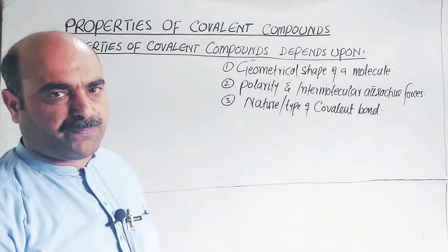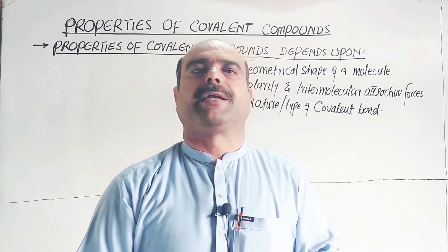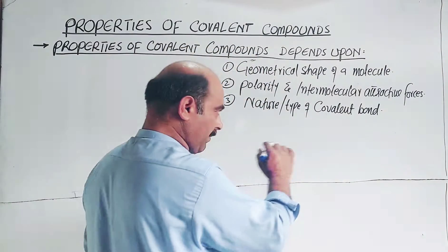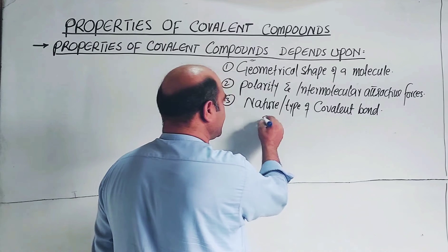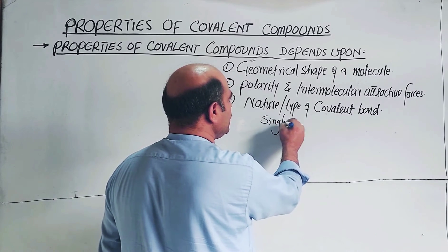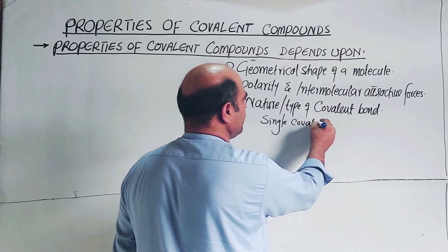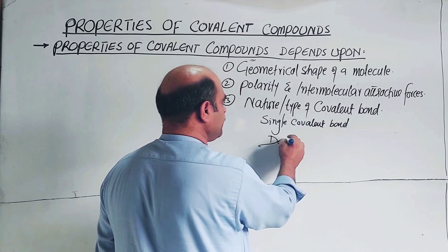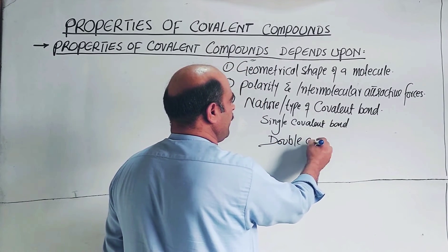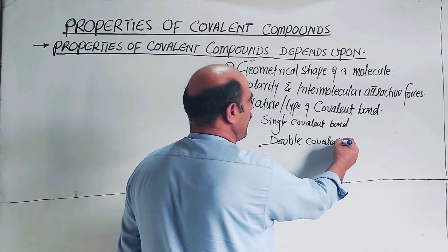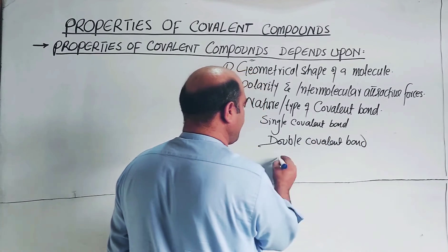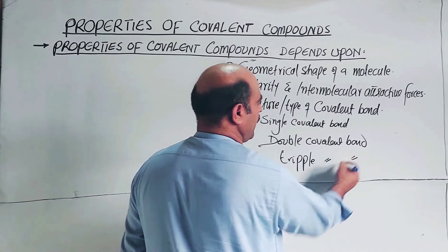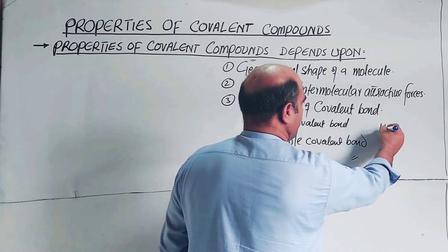Covalent bonds are of three types on the basis of shared pairs of electrons between atoms: single covalent bond, double covalent bond, and triple covalent bond.